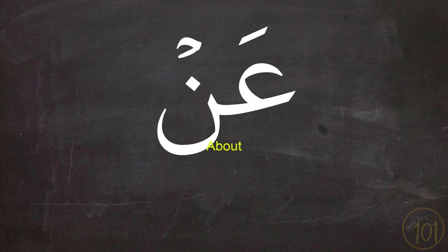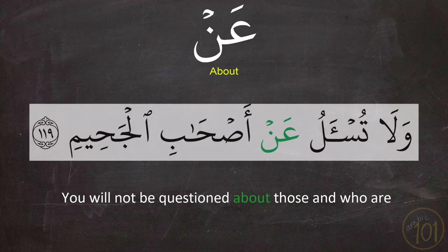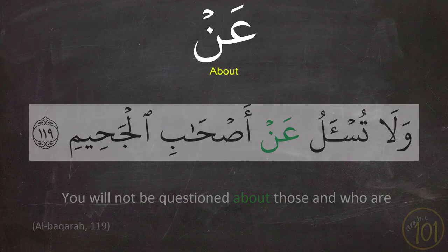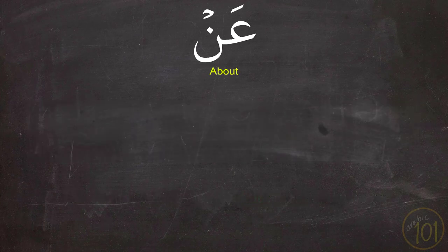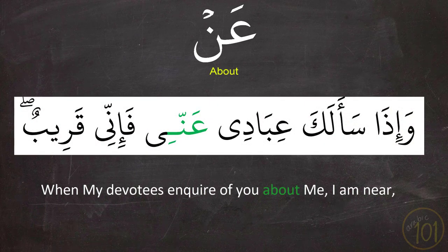The next preposition is عَنْ and it means 'about'. Like in these examples: وَلَا تُسْأَلُ عَنْ أَصْحَابِ الْجَحِيمِ — and: وَإِذَا سَأَلَكَ عِبَادِي عَنِّي فَإِنِّي قَرِيبٌ.